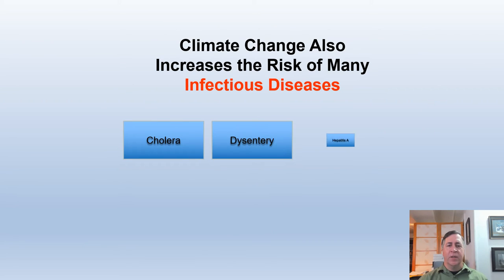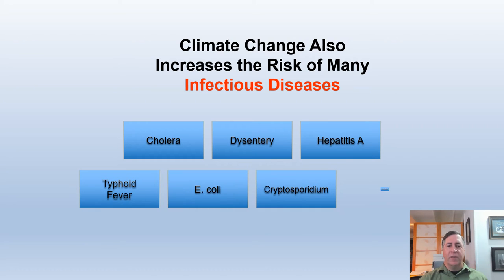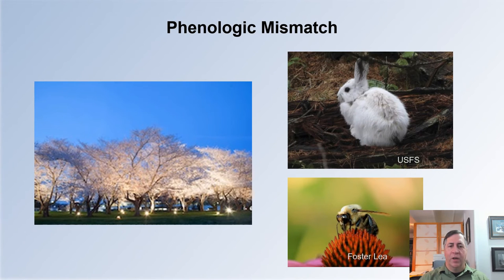Climate change can increase the risk of many infectious diseases through increased temperatures, heavier rainfall, and tropical diseases moving further north. Warming can also allow mosquitoes or ticks to expand their habitat ranges and reproduce more frequently. Some viruses also incubate faster inside mosquitoes and other vectors when temperatures are hotter. Climate change can also affect phenology — the timing of plant and animal life events like migration, flowering, pollination, and seasonal color change. For instance, if a bird migrates based on changes in day length but butterfly eggs hatch earlier because of warmer temperatures, the bird may arrive too late to find enough caterpillars to feed its young.